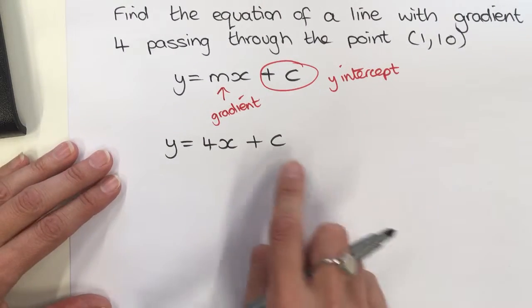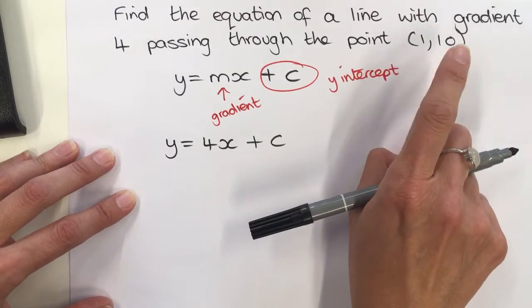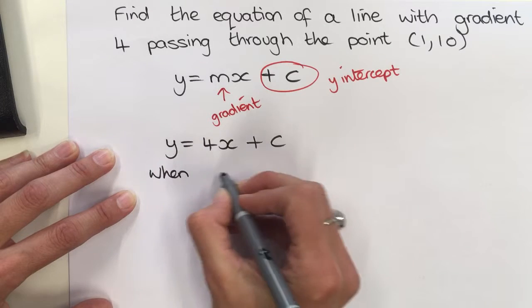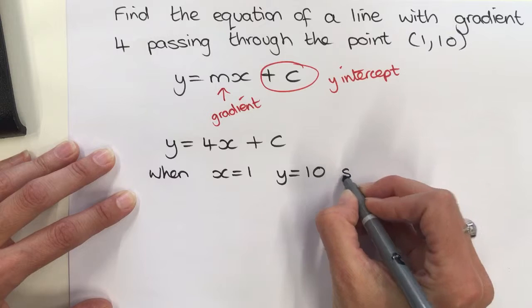Now we don't know what the c value is, but we do know that when x is 1, y is 10 because we are given a coordinate. So when x = 1, y = 10, and I'm going to substitute this into this equation.